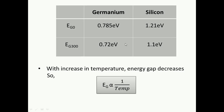The energy gap values vary for different materials. In EDC, we have two important materials: germanium and silicon. We will see the values of energy gap for these two materials as we vary temperature. At 0 Kelvin, when we increase the temperature to 300 Kelvin, the germanium energy gap decreases from 0.785 to 0.72 electron volts. For silicon, it comes down from 1.21 to 1.1 electron volts. So with increase in temperature, energy gap decreases. EG is inversely proportional to temperature.